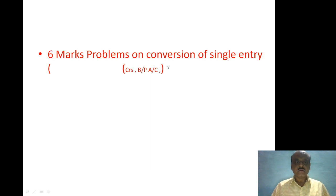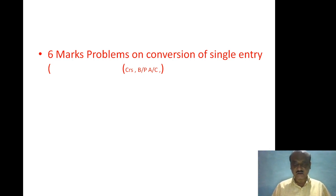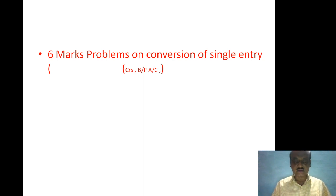Dear students, let us discuss some more problems on conversion of single entry, carrying six marks. In our previous video we discussed the total debtors account and bills receivable account. Today we shall discuss the total creditors account and bills payable account. The total creditors account is opened in order to calculate credit purchases, closing creditors, and bills payable issued to creditors. The bills payable account is opened to ascertain the closing balance of bills payable or bills payable issued to creditors.